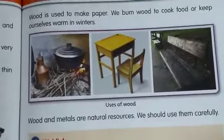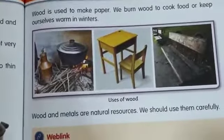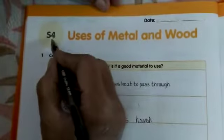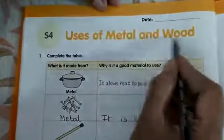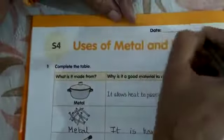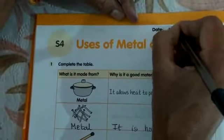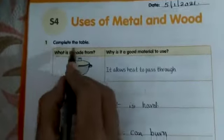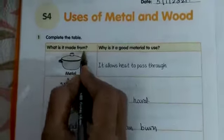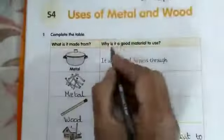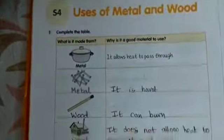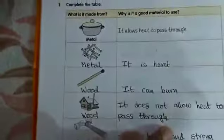Now, this is the lesson — you have to read it twice. Next, all of you take out your EBS worksheet. Open your EBS volume 2 worksheet, page number 38, S4: Uses of Metal and Wood. First, write today's date: 5-1-21. First question: Complete the table — what is it made from, and why is it a good material to use? They gave some objects here, and we had to write the reason.